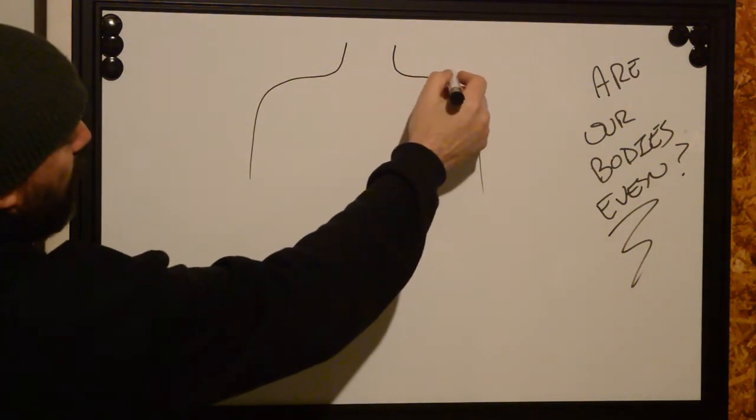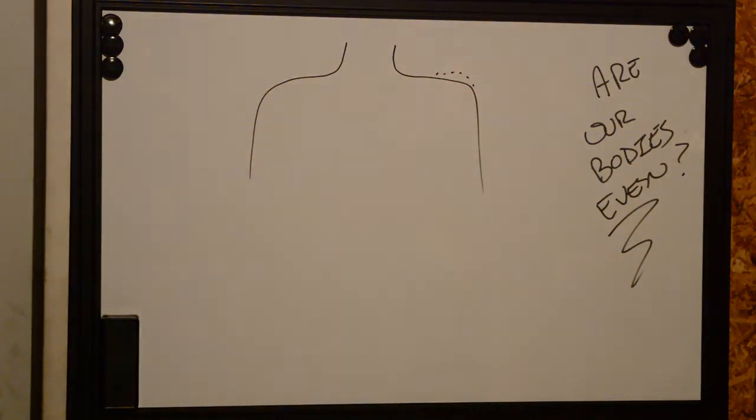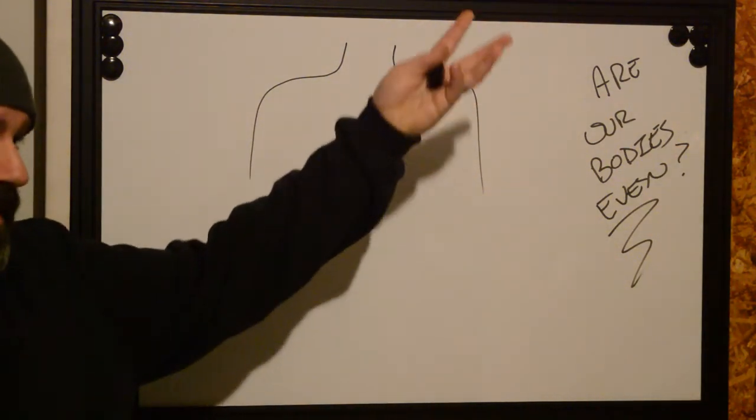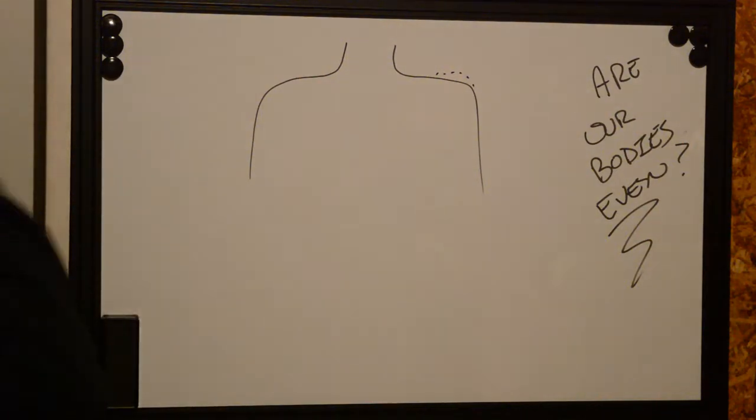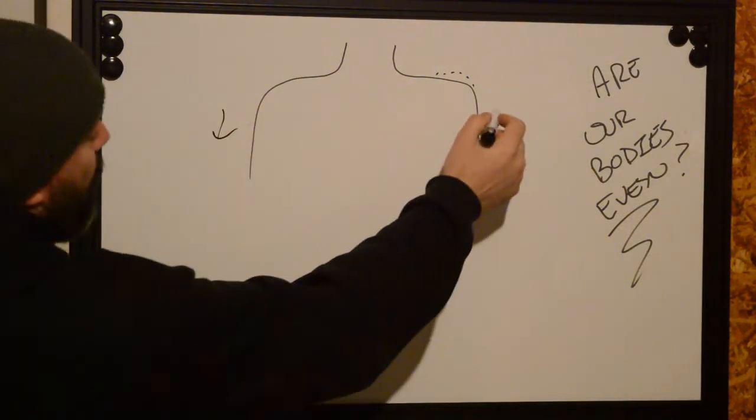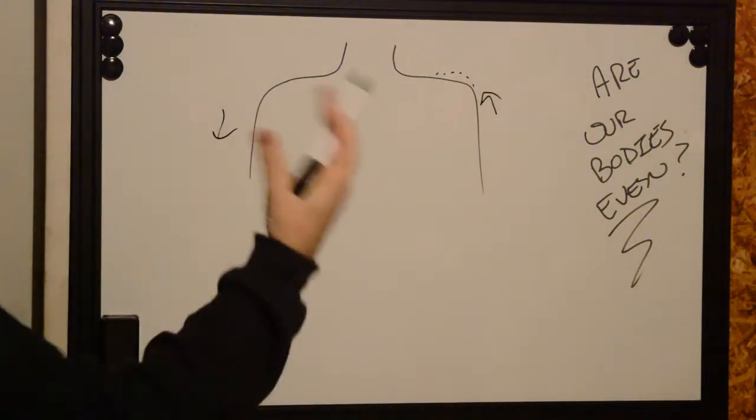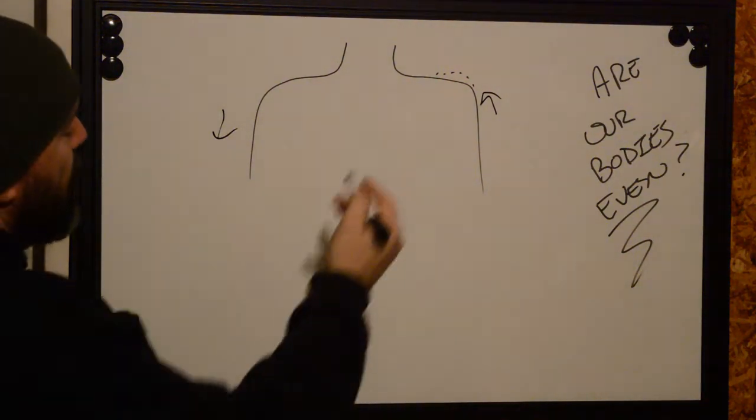Usually the dominant arm of a person who is in this world going about existing doing whatever is gonna usually hang a little bit lower than their non-dominant side which is gonna be a bit higher. So what does this mean when we're placing a tattoo?